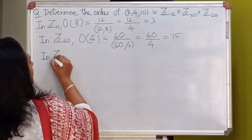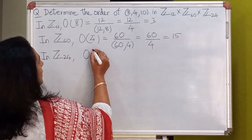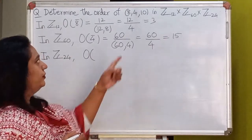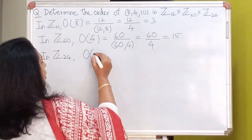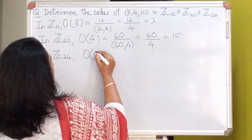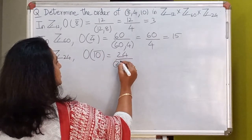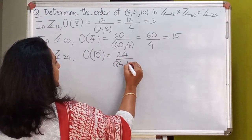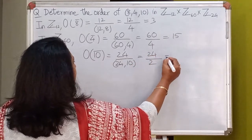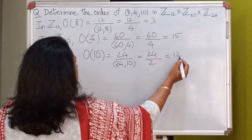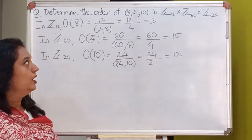And then let's look at the order of 10 in Z24. The order of 10-bar will be 24 divided by gcd(24, 10). The gcd of 24 and 10 is 2, so this will be 12.